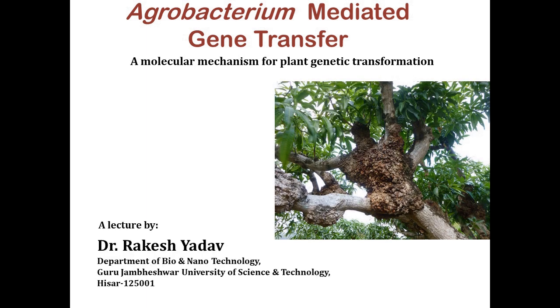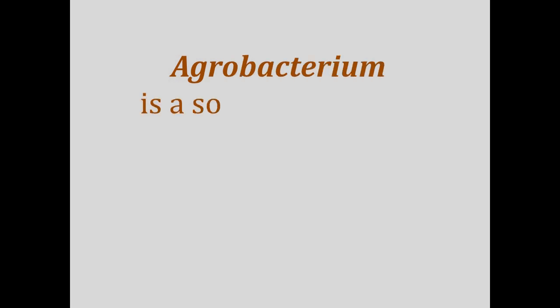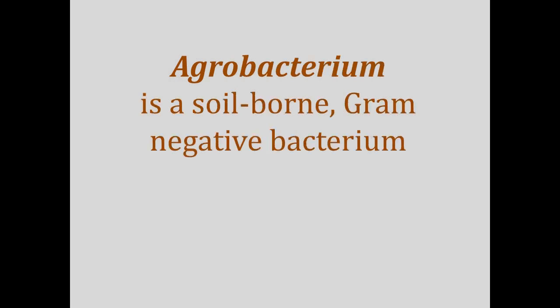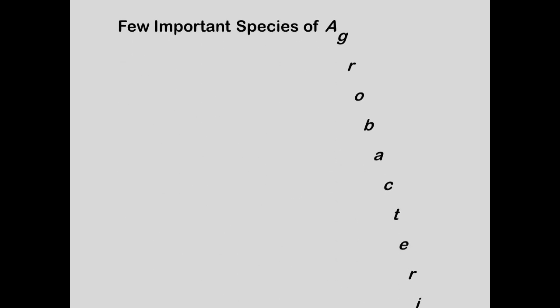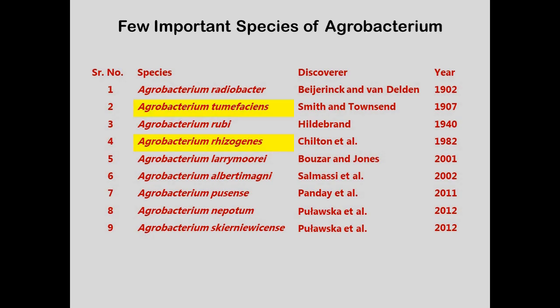As I mentioned in the introduction trailer, agrobacterium is a soil-born gram-negative bacterium and belongs to the same family as rhizobium. There are many species of agrobacterium. I have enlisted a few of them along with the name of their discoverer and year of discovery. However, only two species are important to use as a tool to transfer certain genes in plants: tumefaciens and rhizogenes.